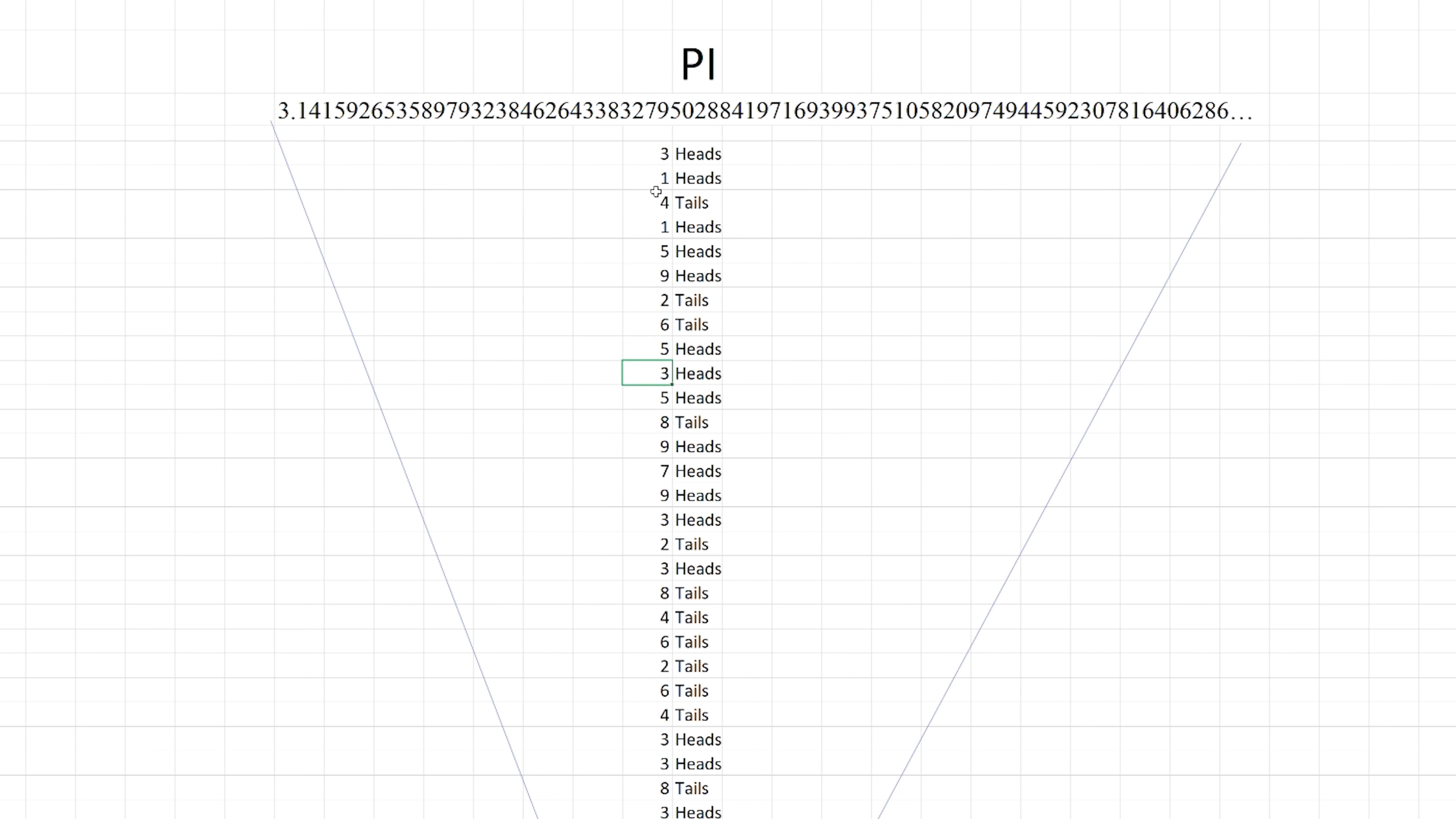Now to someone who doesn't know the algorithm, it seems like it's random with no repeating pattern whatsoever. But if you just knew that I was using the digits of pi and whether they were odd or even, then you would know what was going on and everything I was going to say every single time.